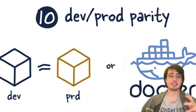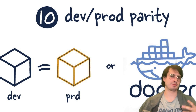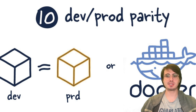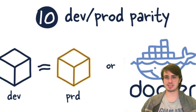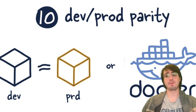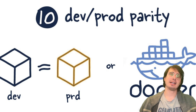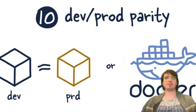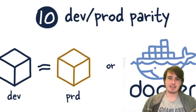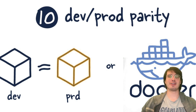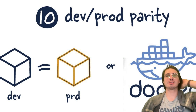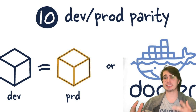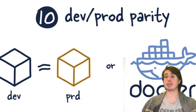The 10th principle is dev and prod parity. You want to minimize any gaps between development and production environments. Use the same backing services in development as in production — if you're using Postgres in dev, use Postgres in prod, don't switch to SQLite. Deployments should happen frequently, and the same people who write code should be involved in deploying and monitoring it, since they're best informed to fix things if something goes wrong. A great way to ensure dev and prod parity is by using Docker to containerize your applications so everything needed is contained within that Docker image.